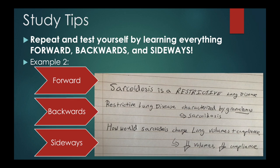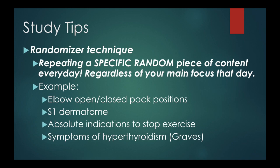When you're studying for the NPTE, even for basic things — like what's the dermatome for the big toe, which is L4 — also be able to learn that backwards and sideways. So if asked what's the L4 dermatome, you'd know it's the big toe. Another technique I call the randomizer technique is essentially repeating a very specific random piece of content every day, multiple times a day, regardless of what your main focus that day is.